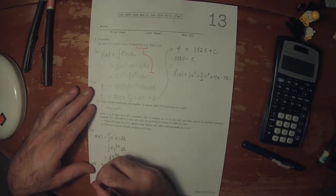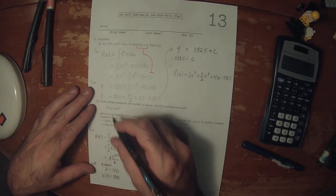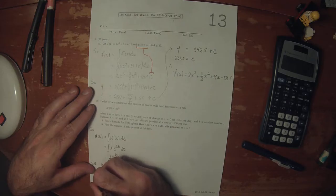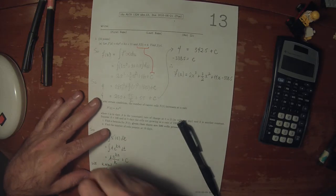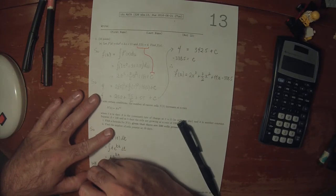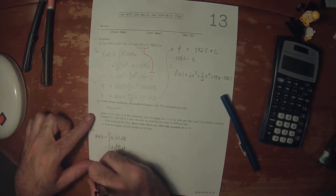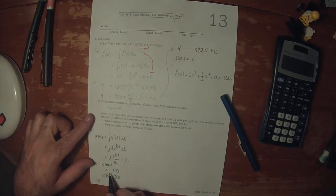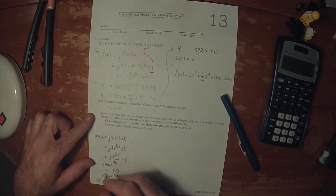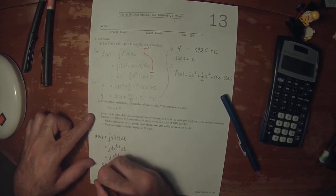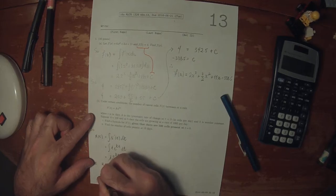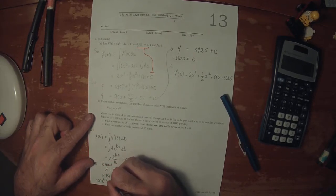So if we plug in 1,000, that's 100 e to k times 5 is 1,000.